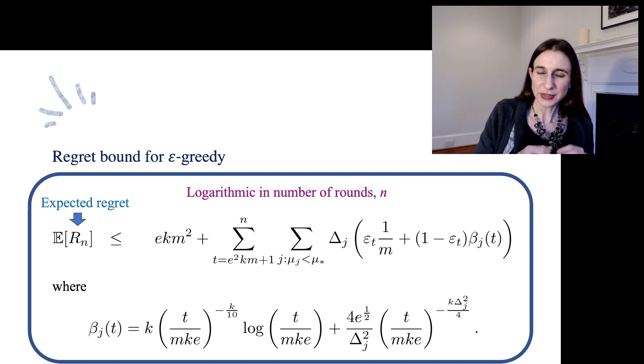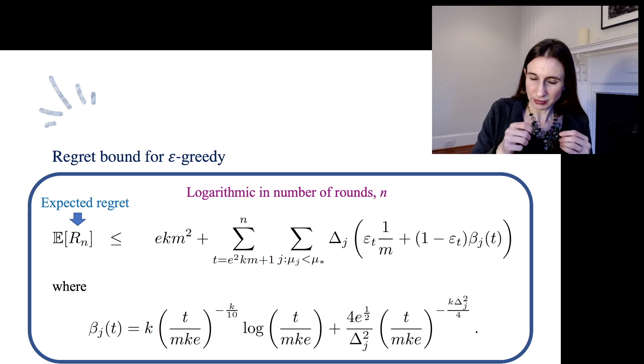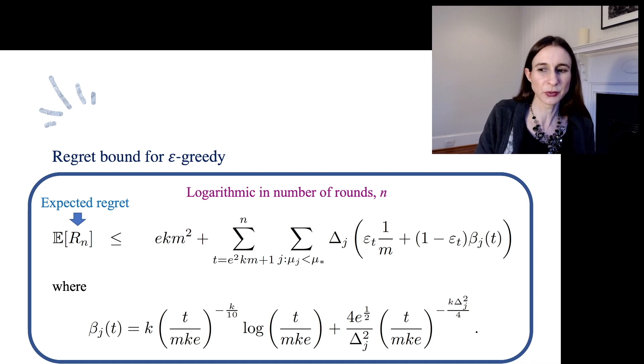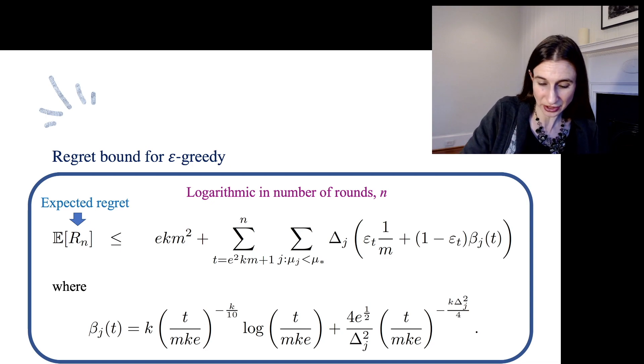A sum of things that are sort of 1 over t, because the integral of 1 over t, that's log, right? So we need all of the terms to be kind of less than 1 over t so that we can get a logarithmic regret. So let's show you how that actually happens.